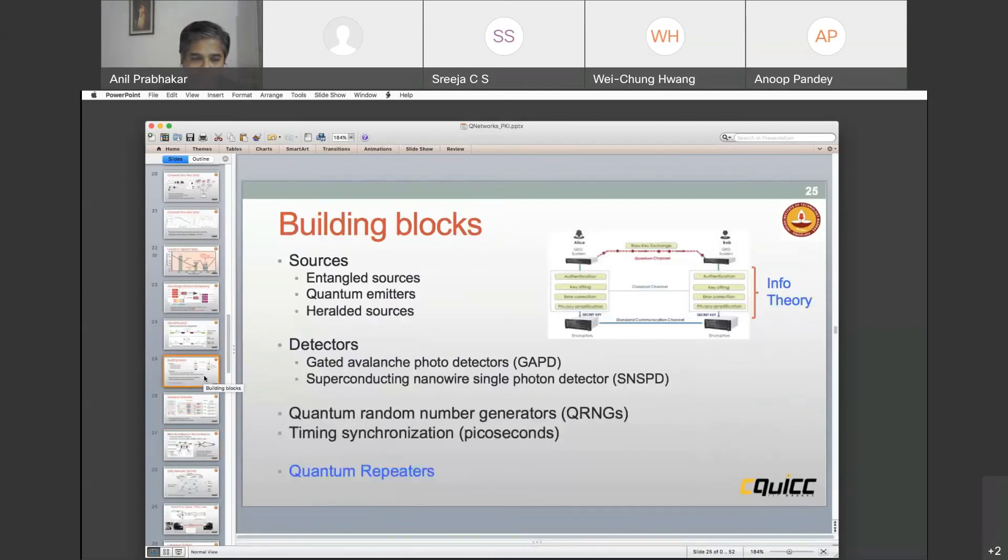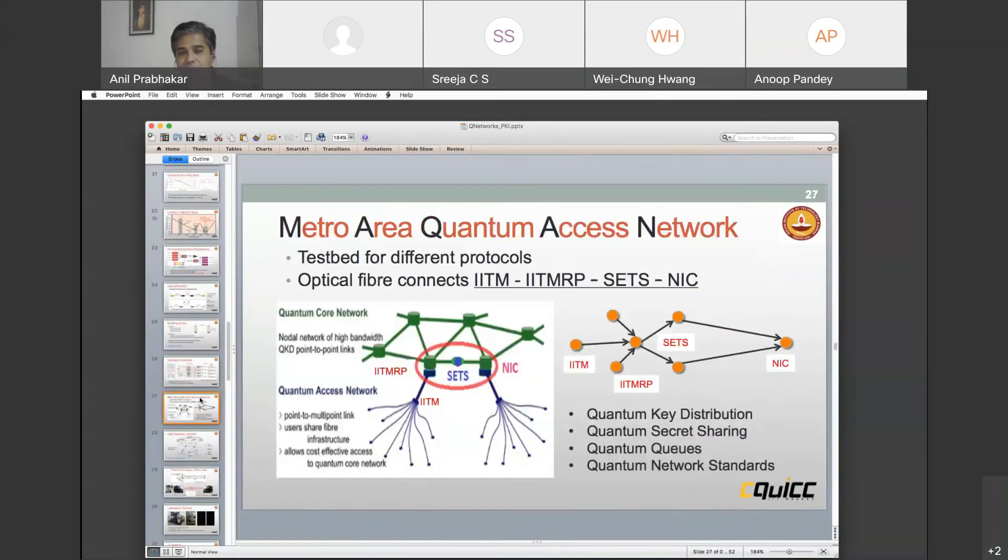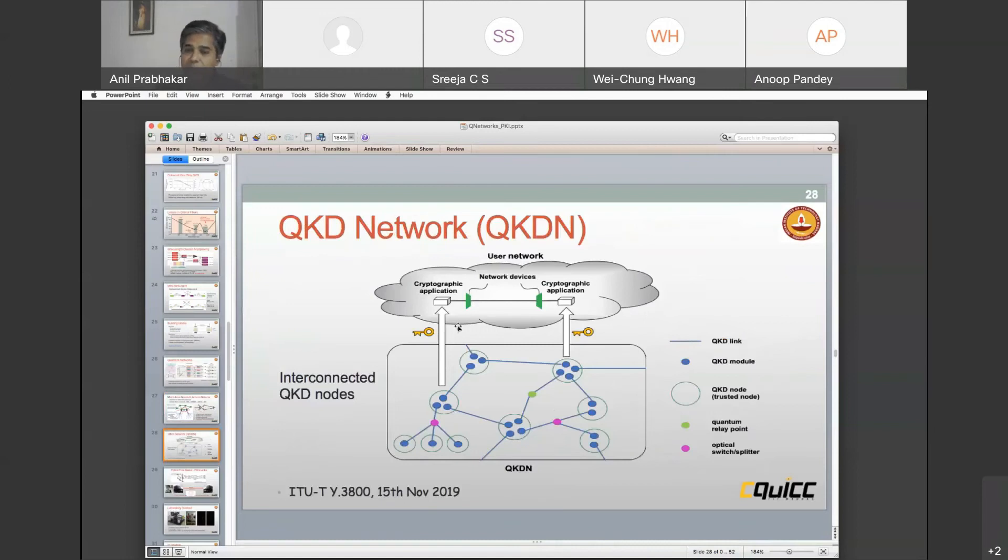Five minutes. Okay. What we are trying to do out here is work with metro areas. Metro areas are also very challenging and we want to be able to set up these networks. Just like Cambridge did it, we are now setting it up between IIT Madras, IIT Madras Research Park, Society for Electronic Transaction Security, and the National Informatics Center. These sort of networks will be short haul and they will allow us to build quantum distribution networks by using a combination of secure nodes, user networks, cryptographic applications.